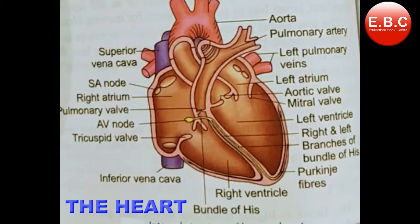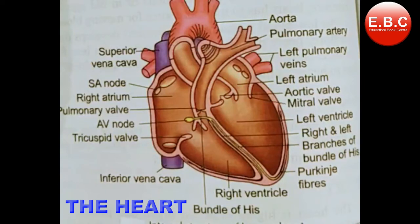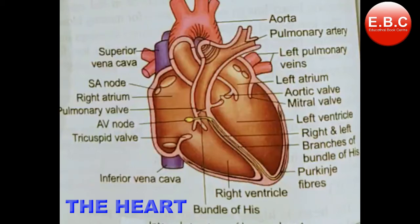The space between the two pericardial membranes, called the pericardial space, is filled with pericardial fluid, which keeps the heart moist and reduces friction between the heart wall and the surrounding tissues when the heart beats.